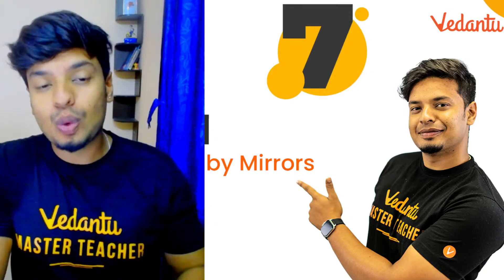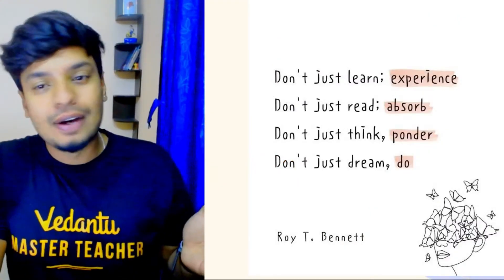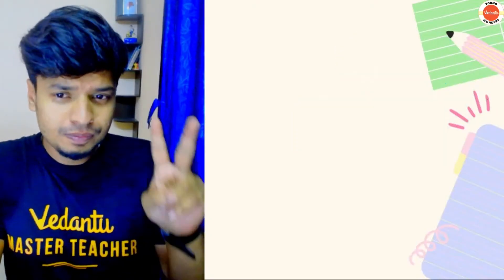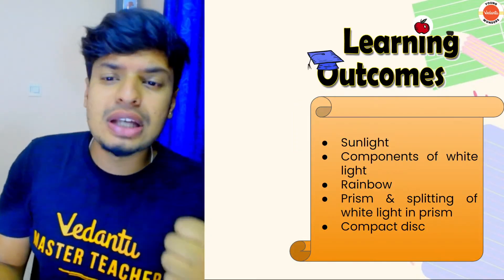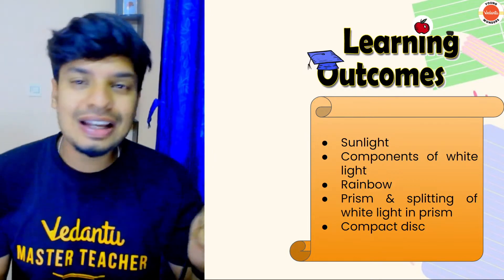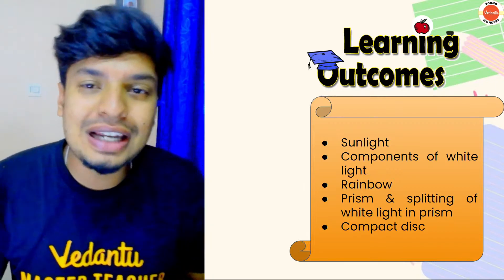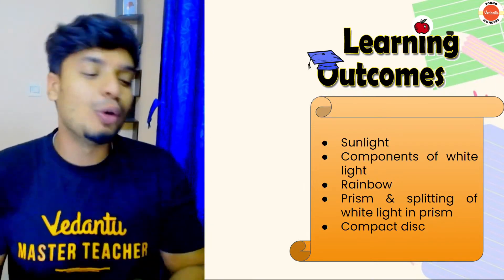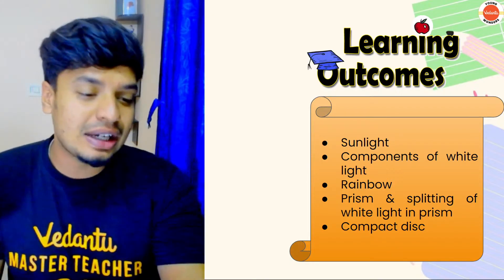So Light 1 was the previous class that we did. Today's session is Light 2, where the learning outcomes are: we learn about sunlight, we learn about components of white light, we learn about rainbow, prism, splitting of white light in a prism, compact disc, and so much more. So are you all ready, people? It's good to see you all in the chat.